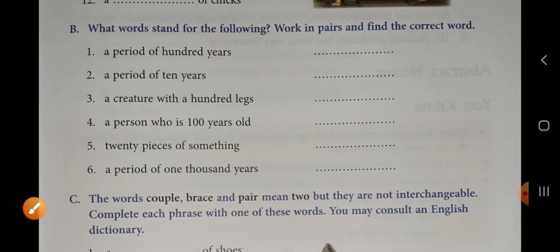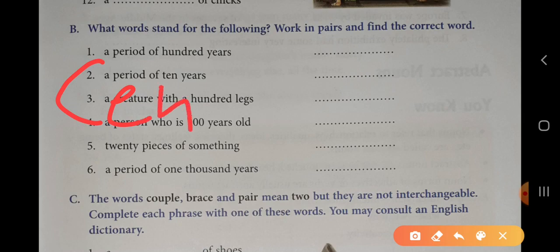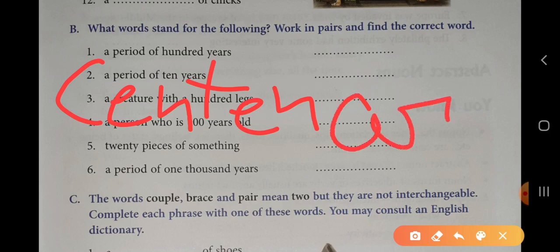Next is fourth number, a person who is hundred years old. What do we call? Centenarian. The spelling of centenarian will be C-E-N-T-E-N-A-R-I-A-N. You can learn the spelling with the rhythm: centenarian.